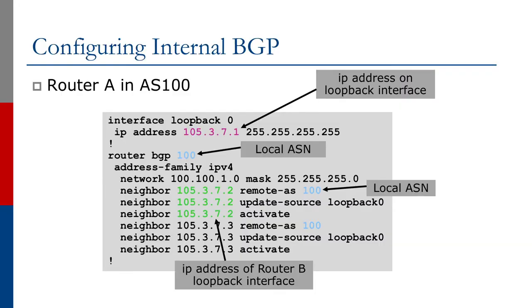How do you go about configuring IBGP? The commands are very similar to EBGP, and again we're looking at examples for Cisco IOS. The differences are: firstly, the remote AS is the same as the local AS number — that's what distinguishes IBGP from EBGP. Secondly, you use the remote router's loopback address as the destination, and you also configure the session to use the local router's loopback address as the source — that has to be done for each neighbour. Thirdly, there's no filtering; you never filter routes in IBGP.